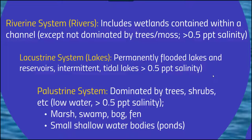With the palustrine systems, it's going to be dominated by trees, shrubs, and typically will have a very low water level — same salinity level. We refer to these oftentimes as marshes or swamps, bogs, or fens. They tend to be small and shallow, or consist of small, shallow water bodies such as ponds.